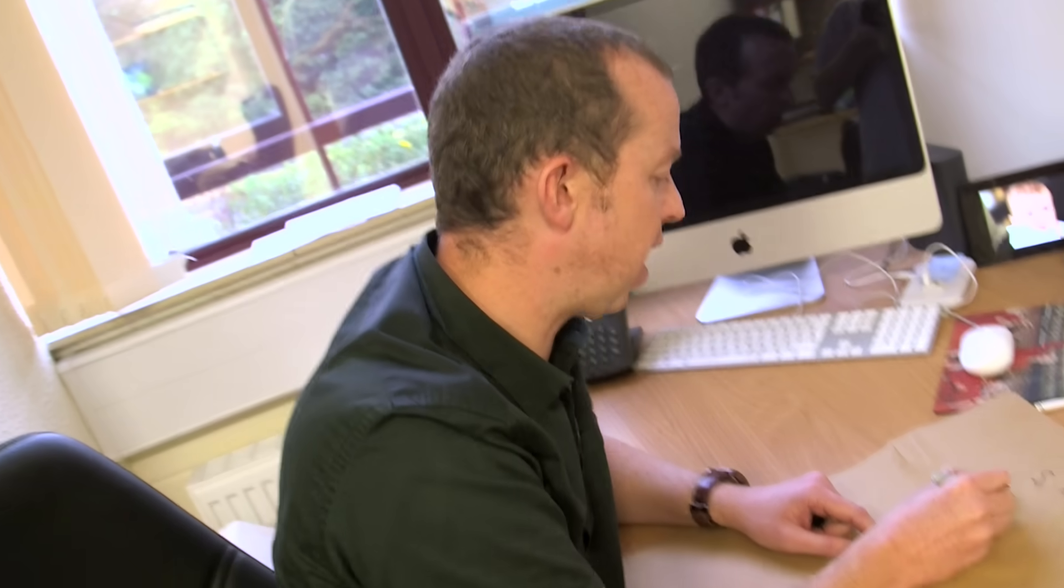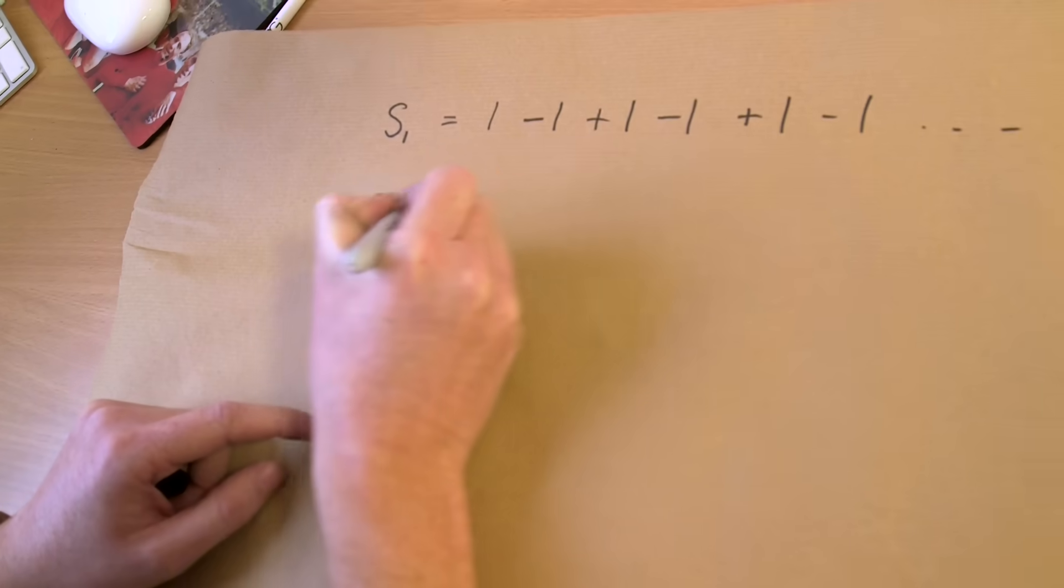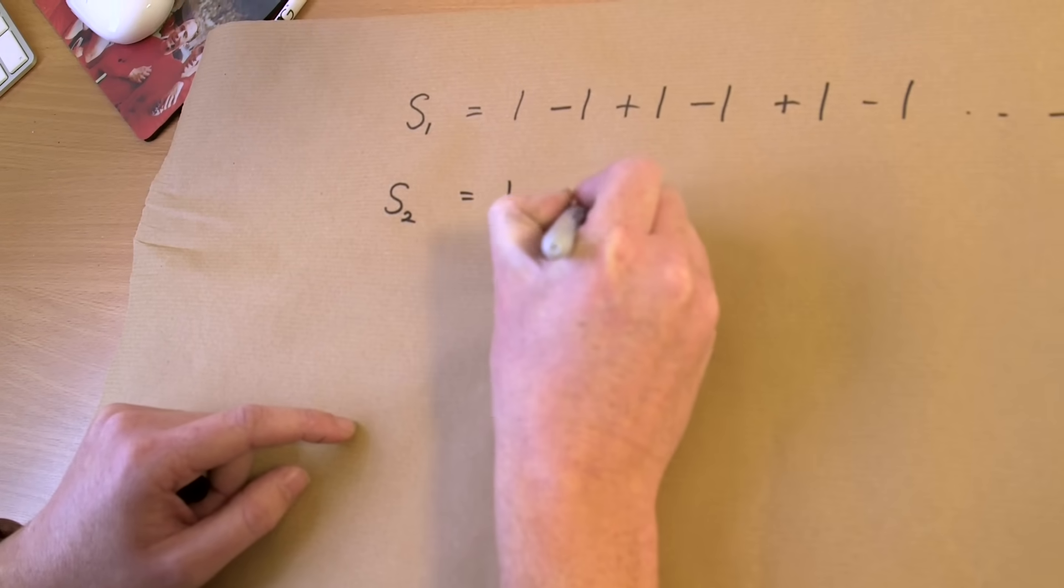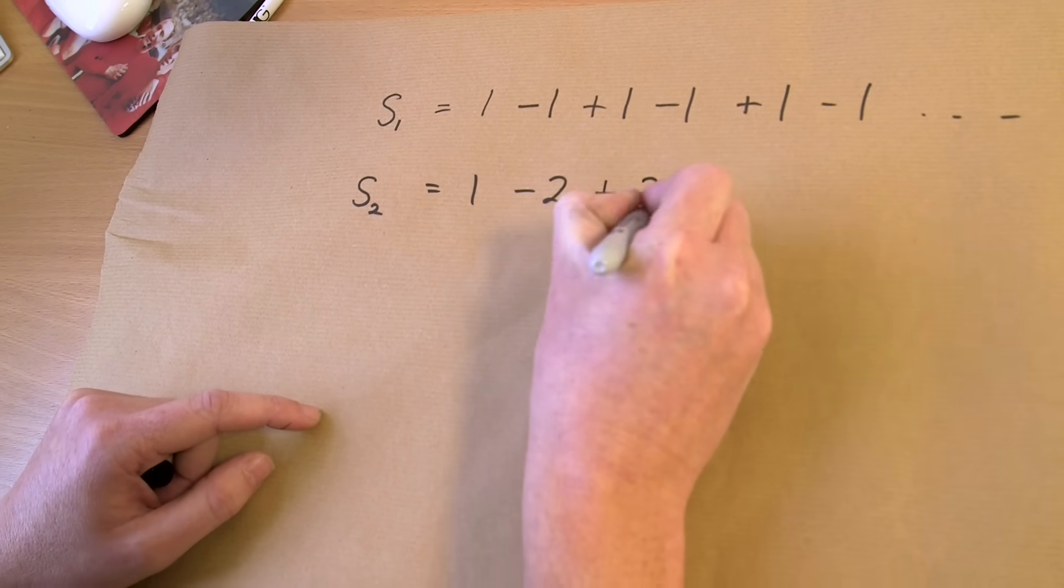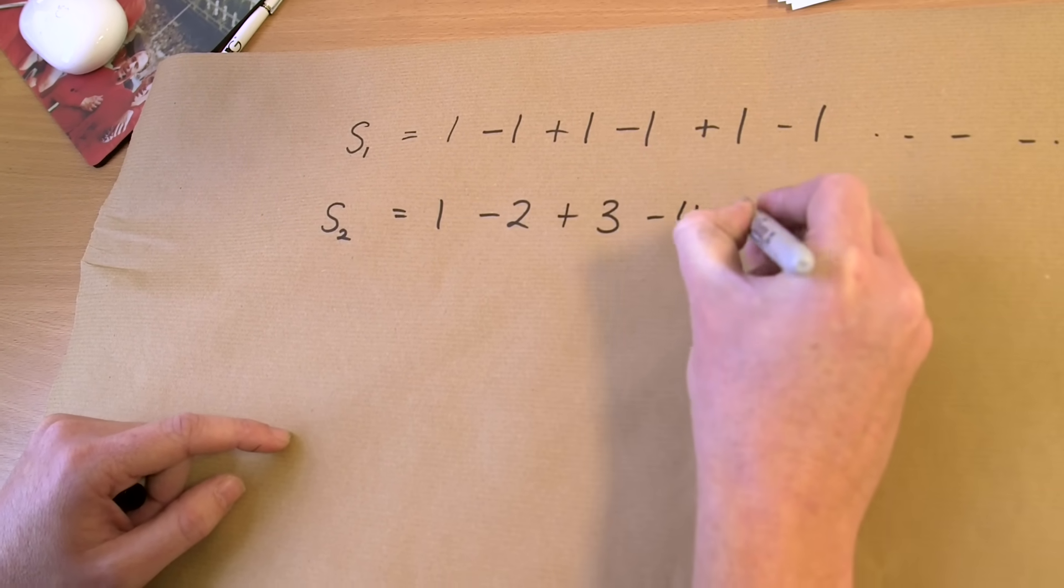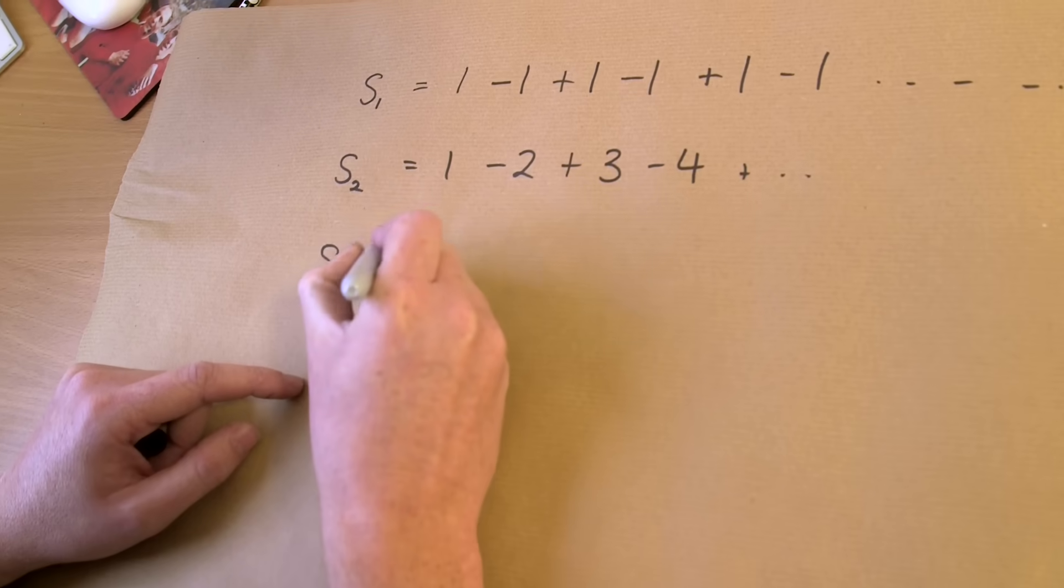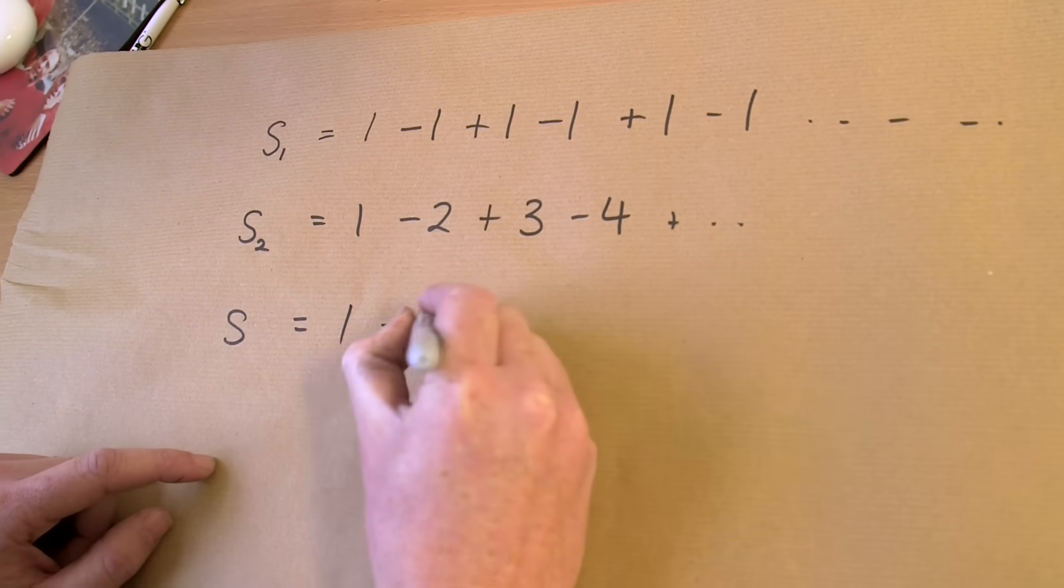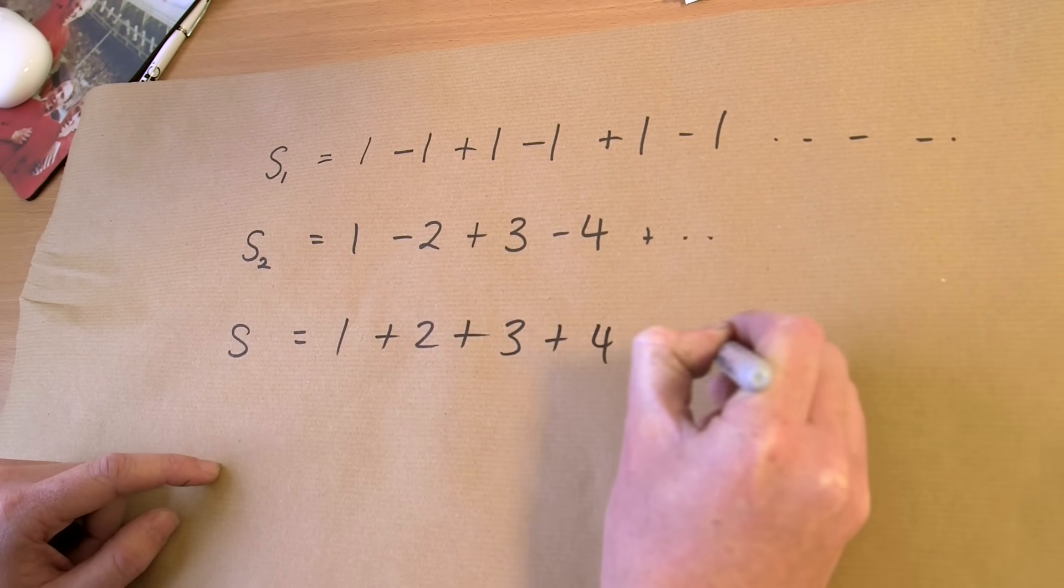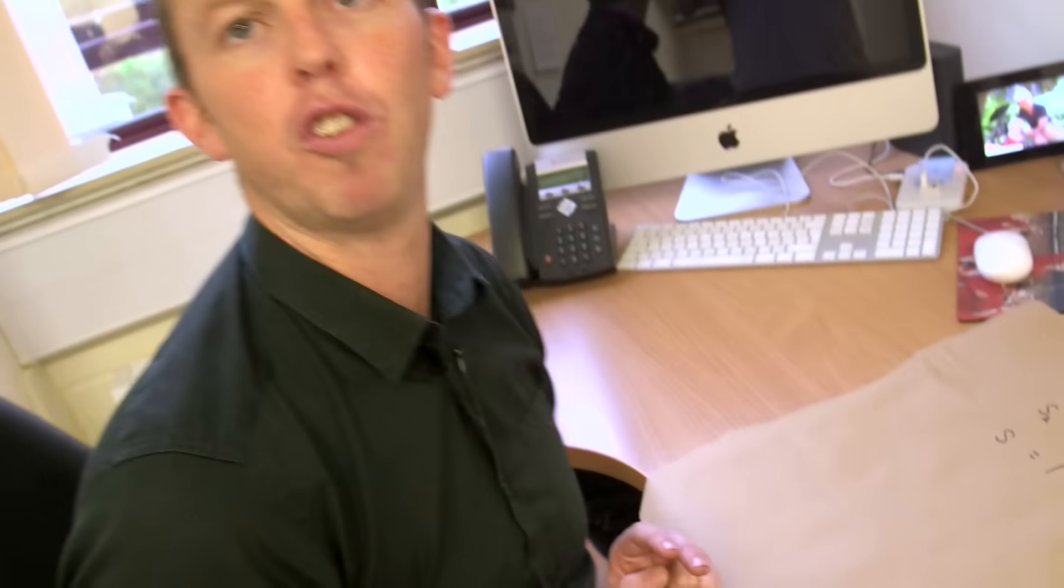That's the first sum I want to look at. The second sum I'm going to look at is 1 minus 2 plus 3 minus 4 and so on. Carry on in that process all the way up. And the third one is, of course, going to be our one that we're really interested in, which is 1 plus 2 plus 3 plus 4 and so on. So we're going to evaluate all these three different sums.